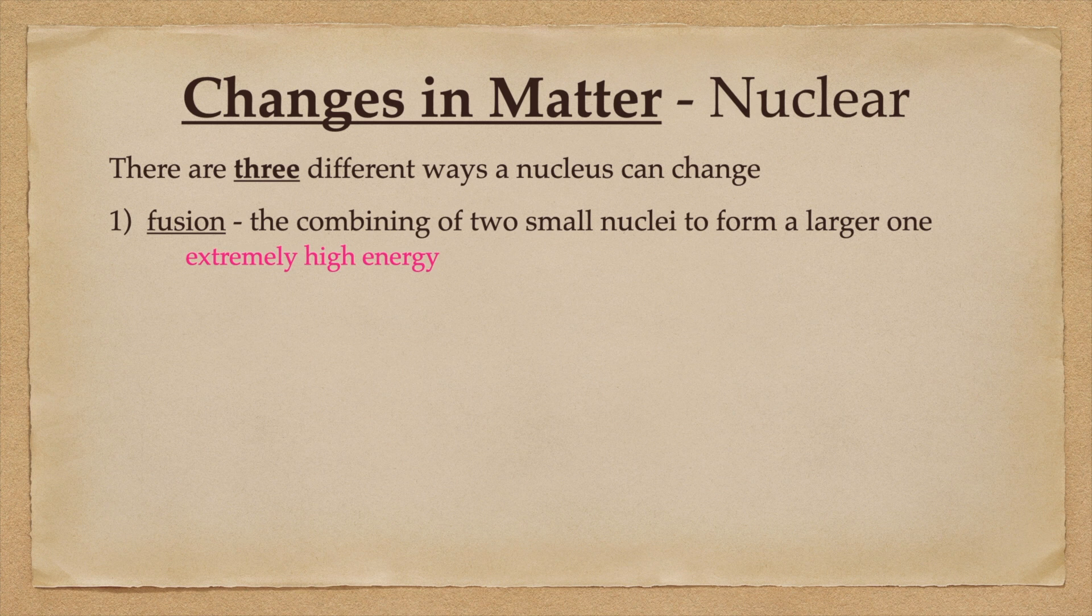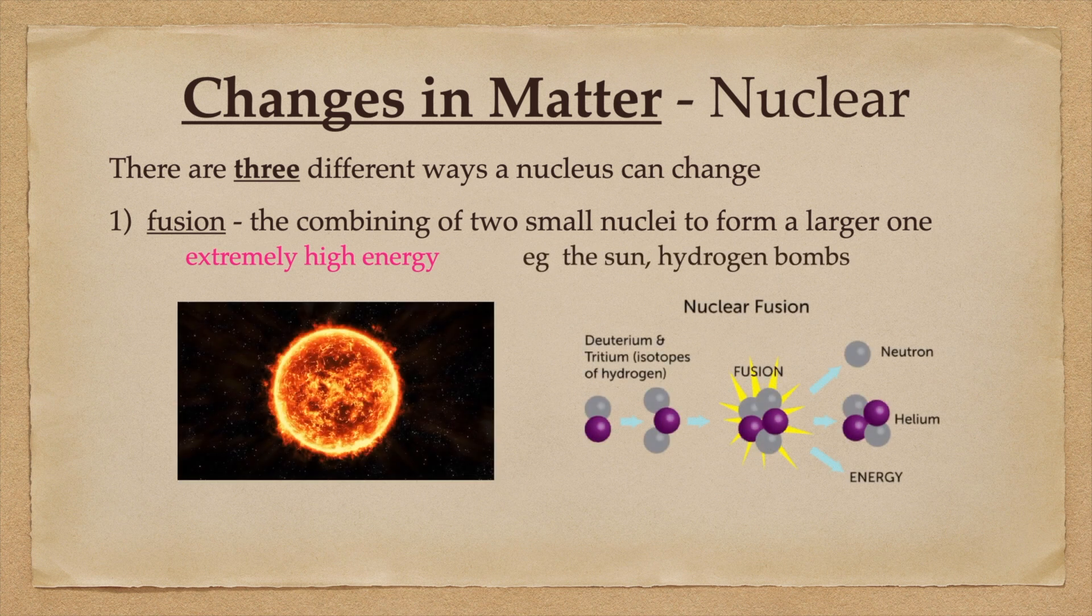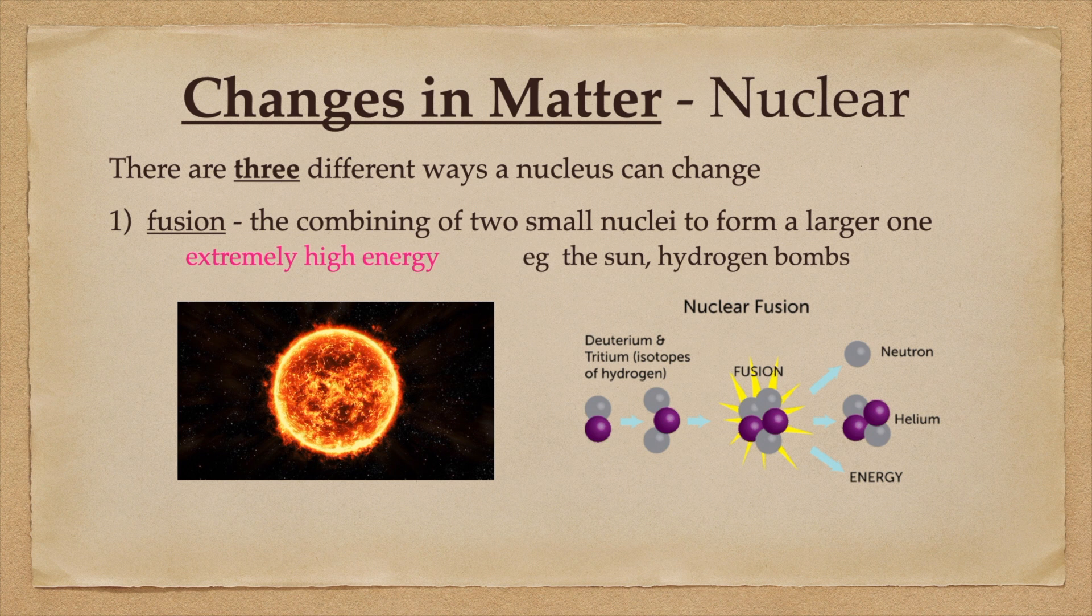A nucleus can be changed in three different ways: fusion, fission, and radiation. Fusion is the combining of two small nuclei to form one larger nucleus and usually some fragments. This usually involves extremely high energy. Examples would be our sun and hydrogen bombs, which undergo the fusion between two hydrogen atoms.